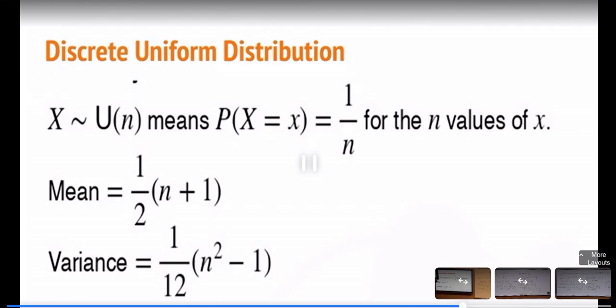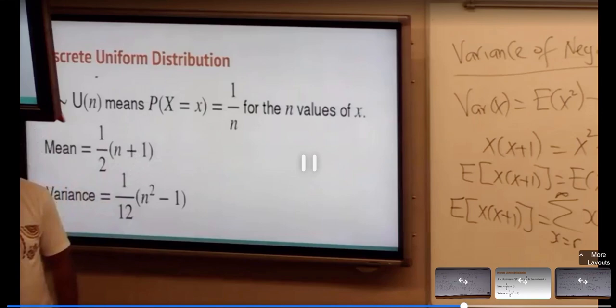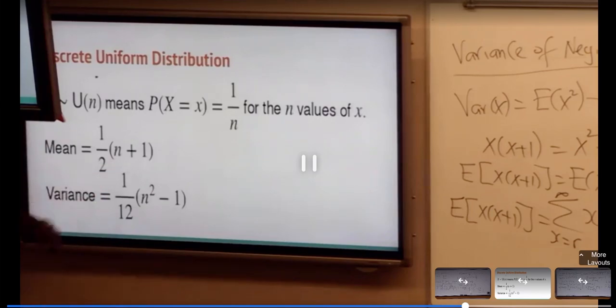When S follows discrete uniform, the parameter is n. The probability mass function for discrete uniform is the most simplest in the world, just 1 over n. The mean is (n+1)/2. The variance is that.